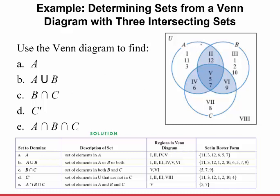To find A union B: set A covers regions 1, 2, 4, 5 and set B covers regions 2, 3, 5, 6 — they overlap in regions 2 and 5. Since we're taking the union, it's everything in A and everything in B: {11, 3, 12, 1, 2, 10, 6, 5, 7, 9}. For B intersect C: B and C overlap in regions 5 and 6, so B∩C = {5, 7, 9}.